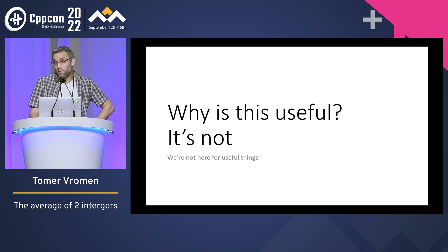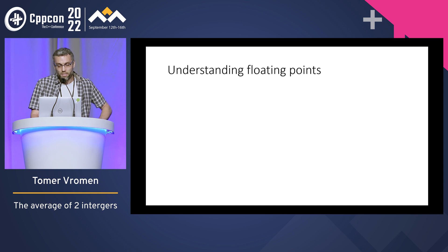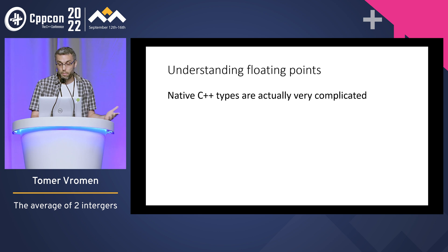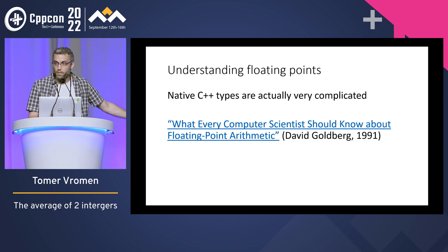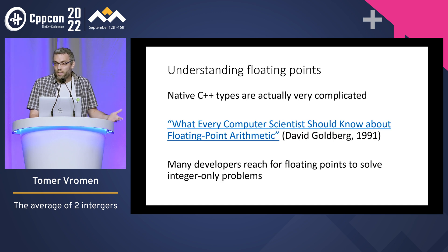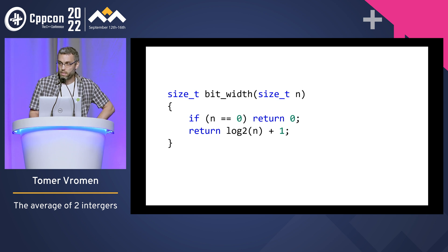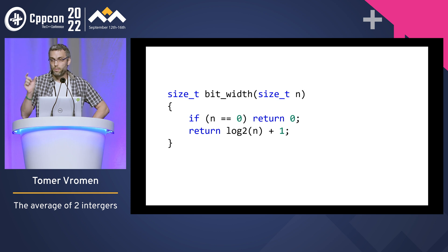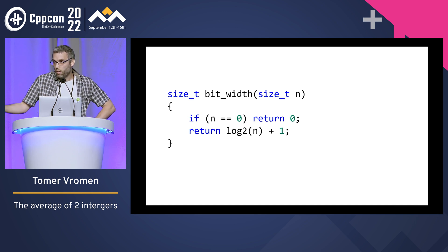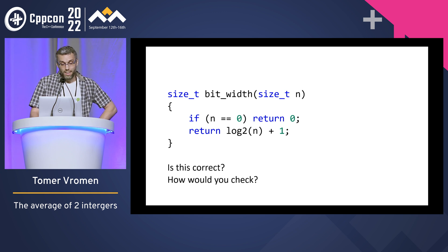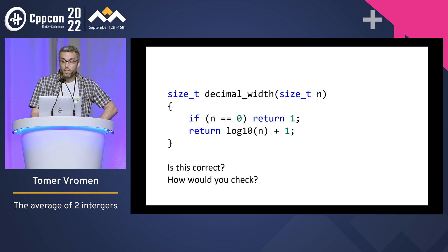Why is this useful? It's not — but we're here for interesting things, and sometimes they're also important. It's important to understand floating points. It's important to understand that native C++ types are actually very complicated — we talk about that all the time. There's this famous paper, frequently cited by many people who didn't even read it fully, including me. Despite all that, developers tend to reach for floating points to solve integer-only problems. For example, this one — I've encountered it more than once in real code: you want the bit-width, like how many bits you need to represent the number N. That's the number of digits in base two — the log base two. So you take N, run log2 on it, which is a floating-point operation, and you get back a floating-point number. Is this correct? And while you're there, consider this function which calculates the number of decimal digits. I'll leave that as an exercise to the audience.